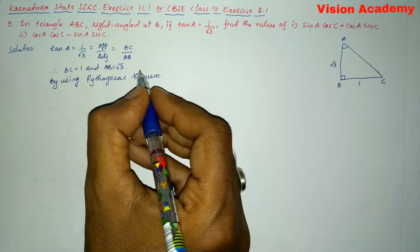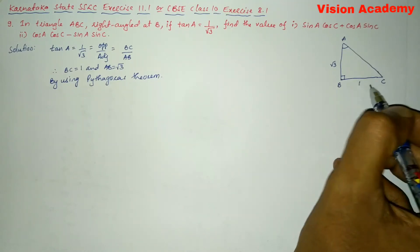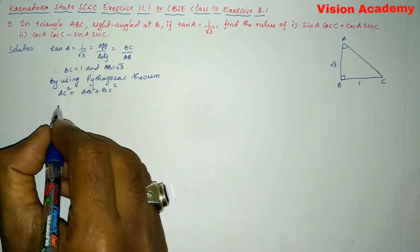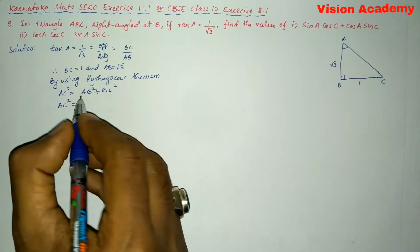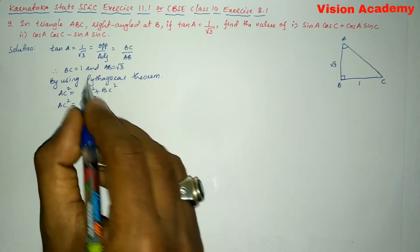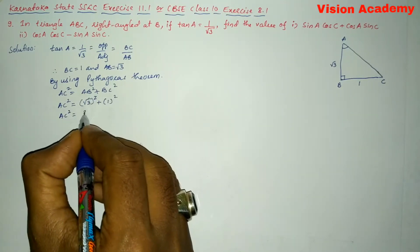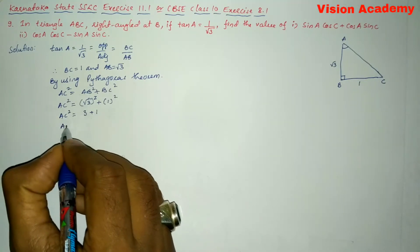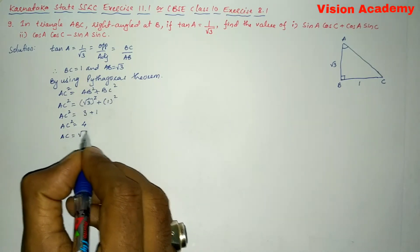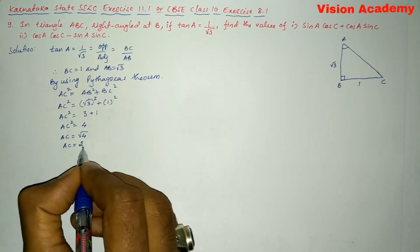Pythagoras theorem states that hypotenuse square is equal to the sum of squares of the other two sides of the right angled triangle. So AC square is equal to AB square plus BC square. AB is square root of 3, so that squared is 3, plus BC is 1 squared, which is 1. So AC square is equal to 3 plus 1, which is 4. Therefore AC is equal to square root of 4, which is 2.